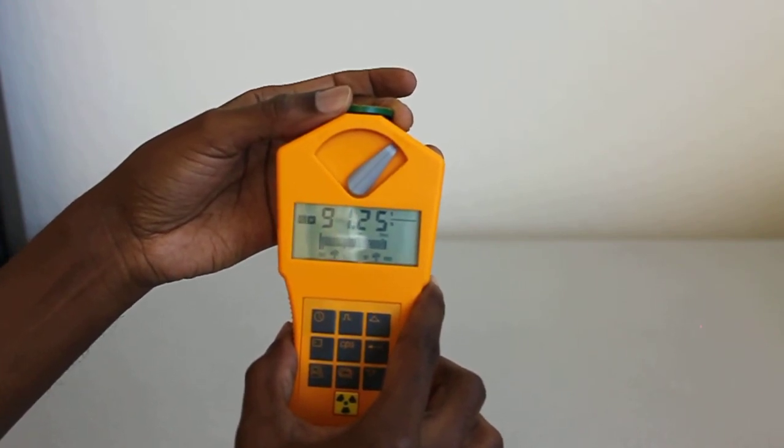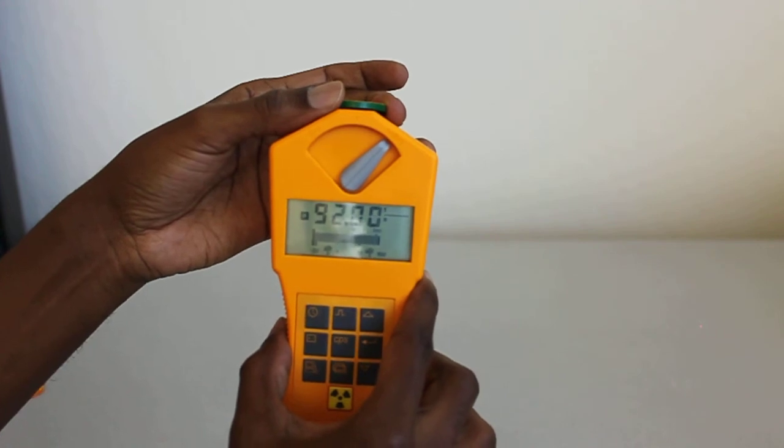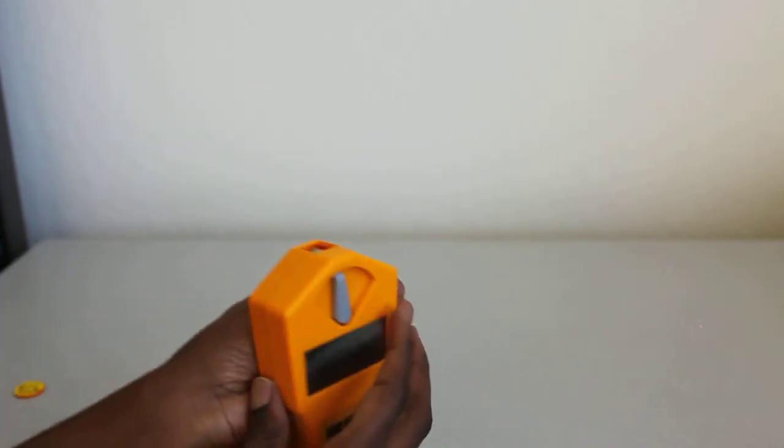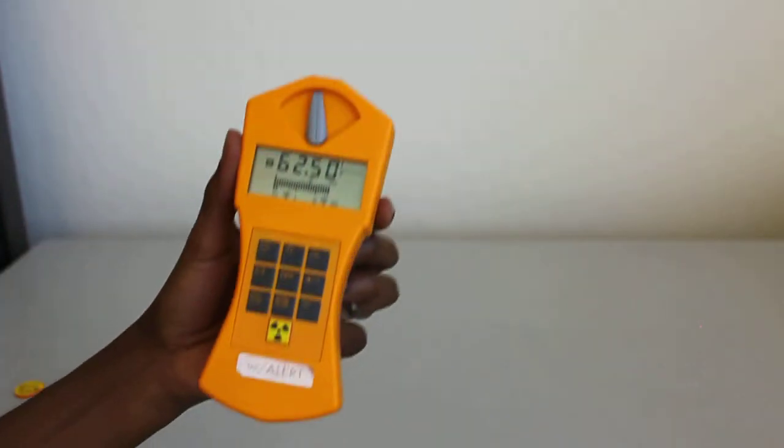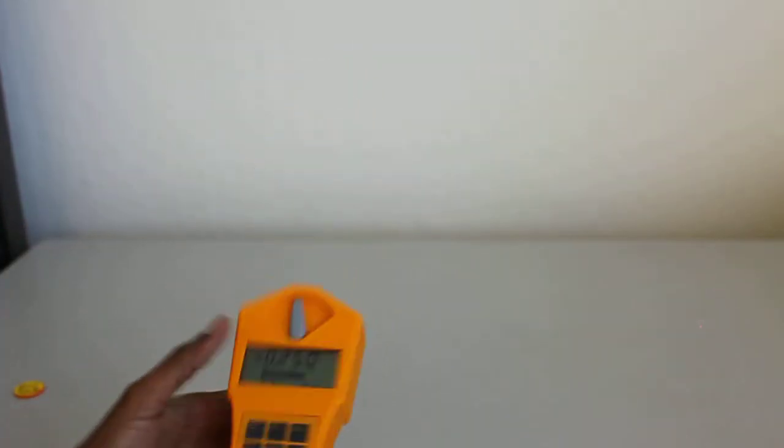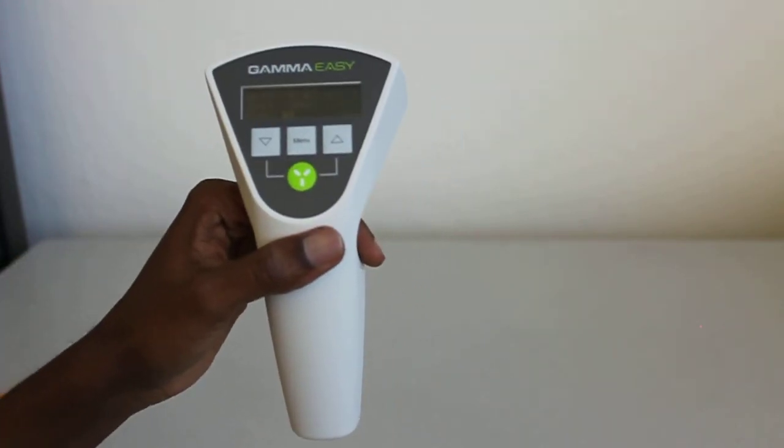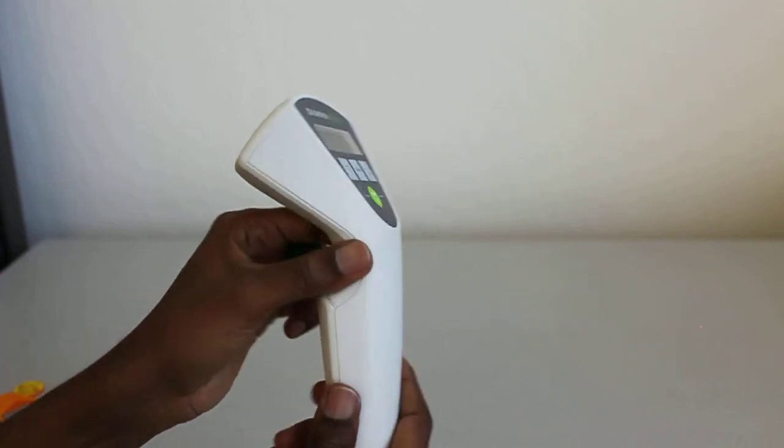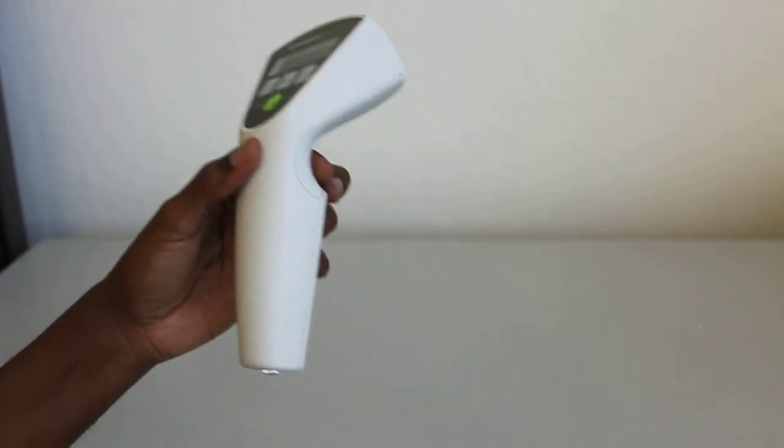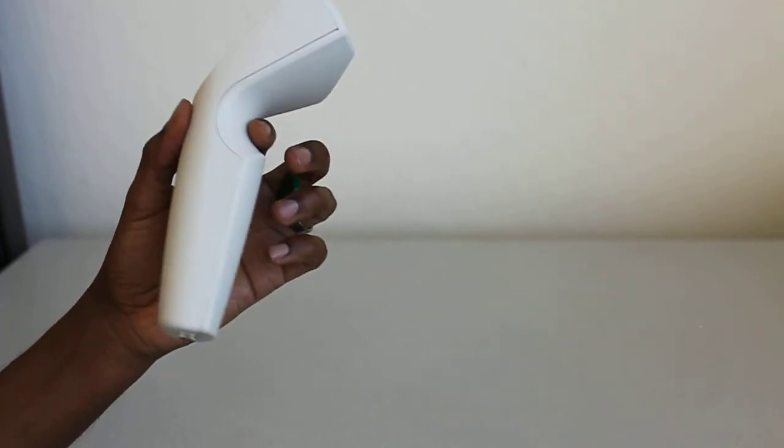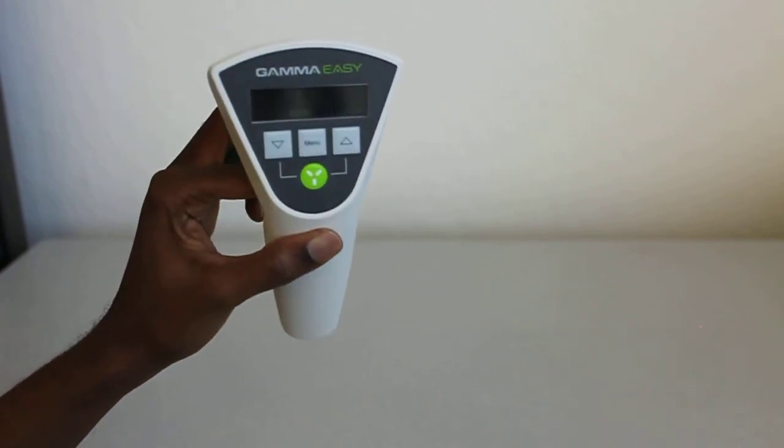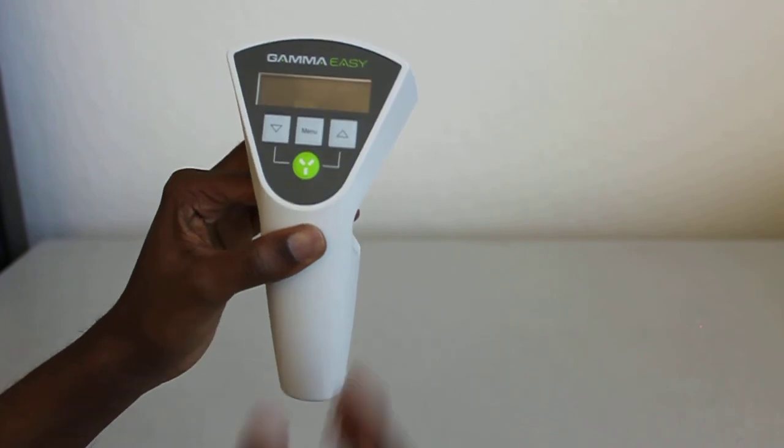So there you have it, the difference between the Gamma Easy and the Gamma Scout. The Gamma Easy can detect gamma radiation pretty well. The Gamma Scout's a little bit more expensive, a little bit more sensitive. But the Gamma Easy is a very good entry-level product. It's good for educational purposes. It's good for measuring radiation like uranium and thorium and all the gamma emitters in rocks.